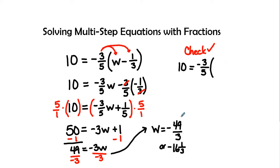And I'm going to insert my answer. So I'm going to insert a negative 49 over 3 minus one third.